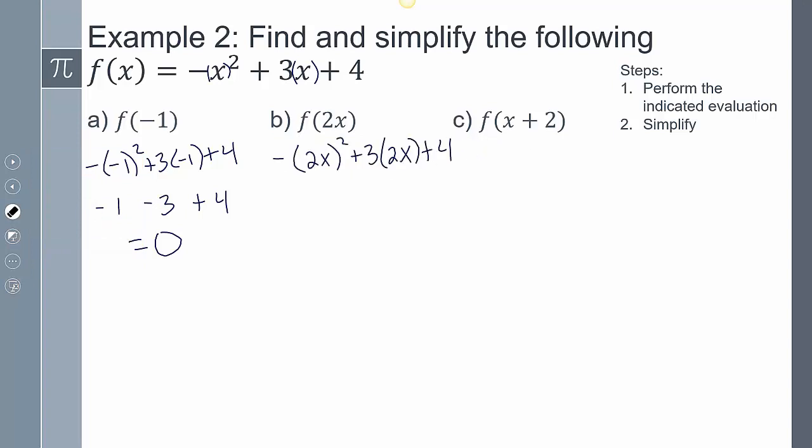And so when I do that, I get this. Now once again, the rest is all simplifying. So 2x squared, this is going to give me 4x squared. And now I have to take that negative and multiply that through, and this becomes 6x plus 4. And so multiplying that through, I get negative 4x squared plus 6x plus 4.